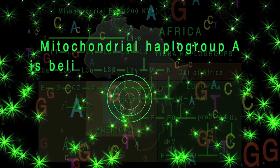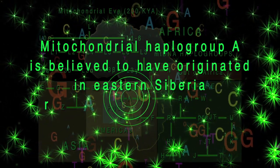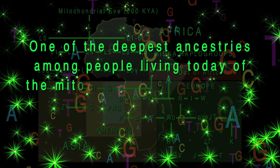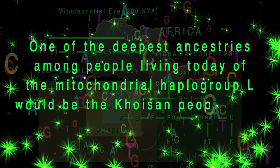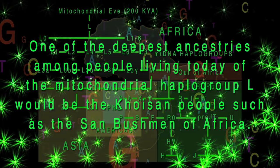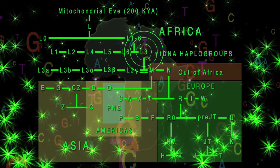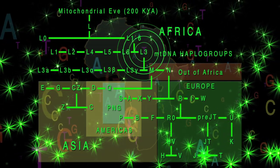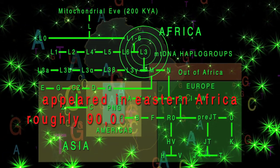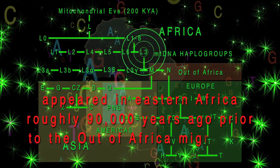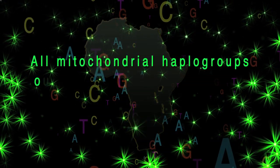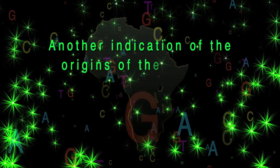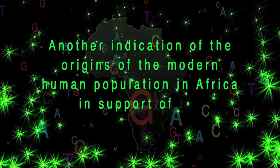Mitochondrial haplogroup A is believed to have originated in Eastern Siberia roughly 40,000 years ago. One of the deepest ancestries among living peoples of the mitochondrial haplogroup L would be the Khoisan people, such as the San Bushmen of Africa. An important subclade of the mitochondrial haplogroup L is L3, believed to have appeared in Eastern Africa roughly 90,000 years ago, prior to the out of Africa migration. All mitochondrial haplogroups outside of Africa are derived from the L3 haplogroup — another indication of the modern human population's African origins.